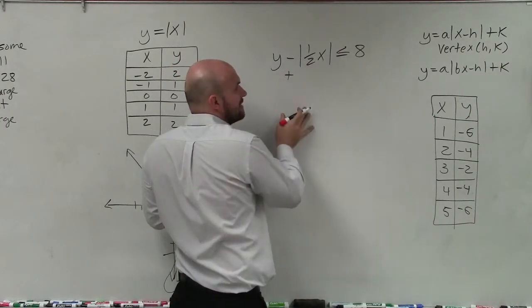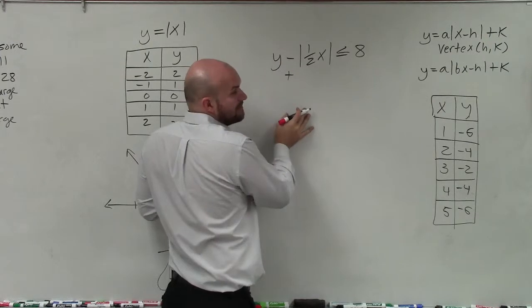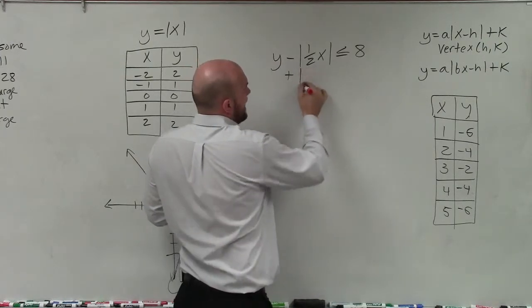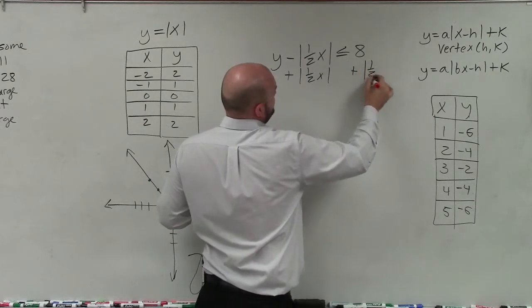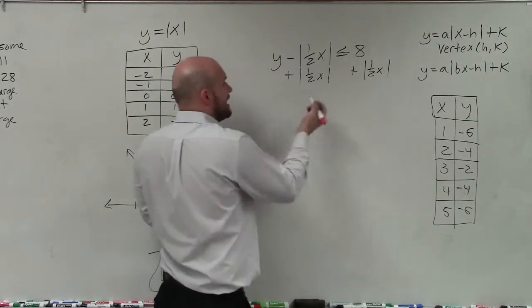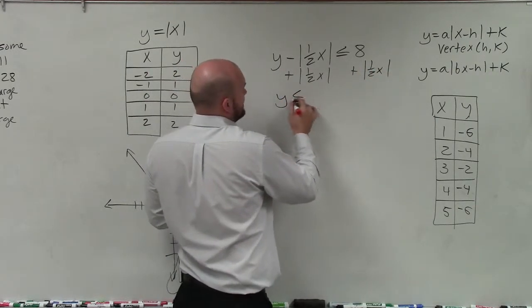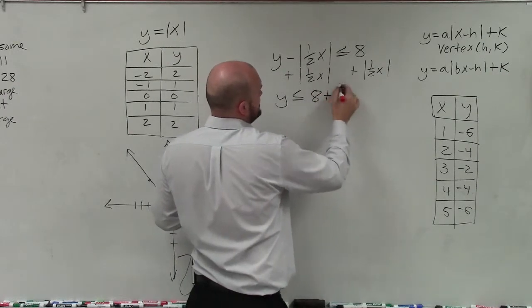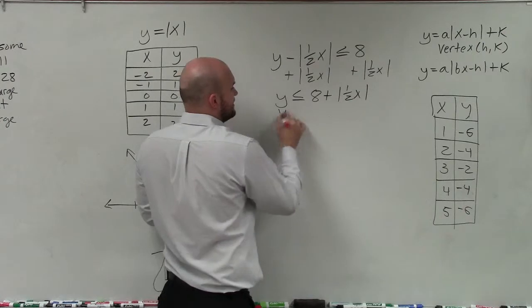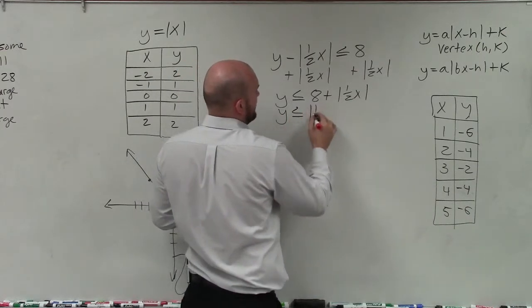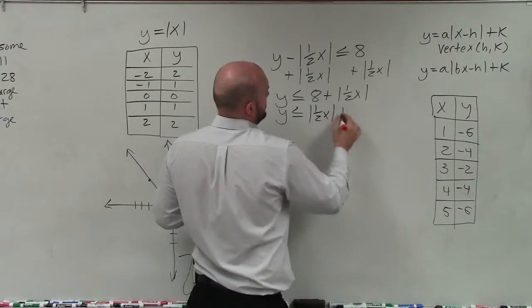I need to get rid of the minus absolute value of 1½x, so I'm going to add the absolute value of 1½x to both sides. Now I have y is less than or equal to 8 plus absolute value of 1½x.